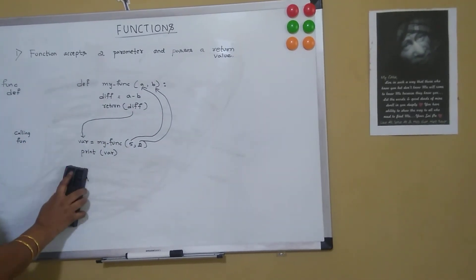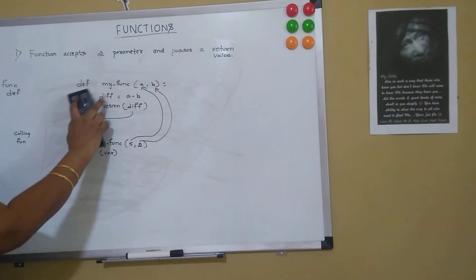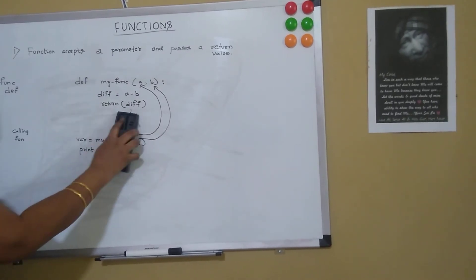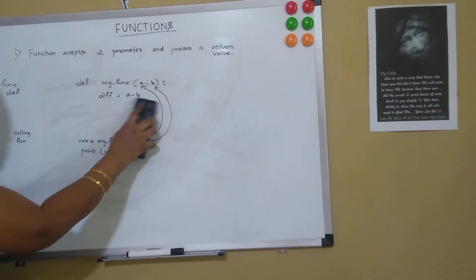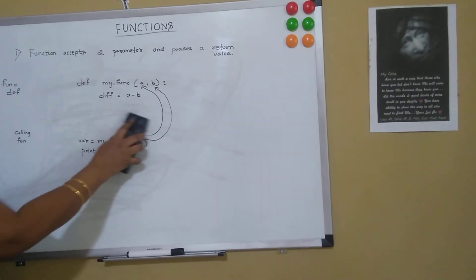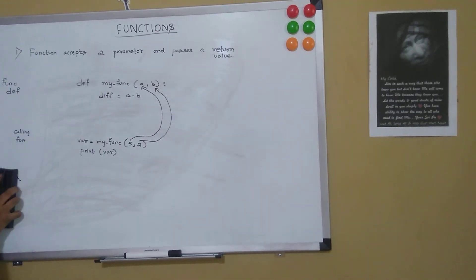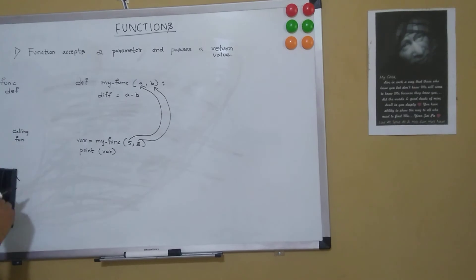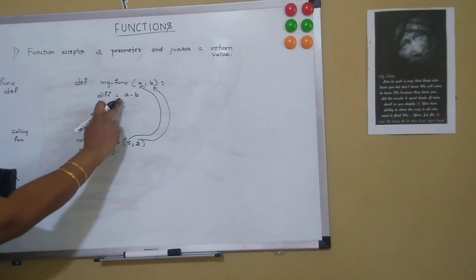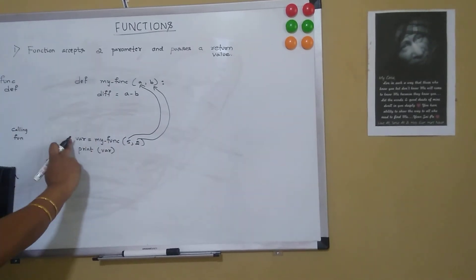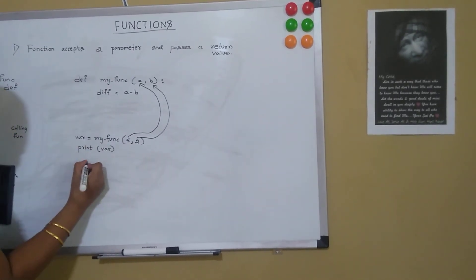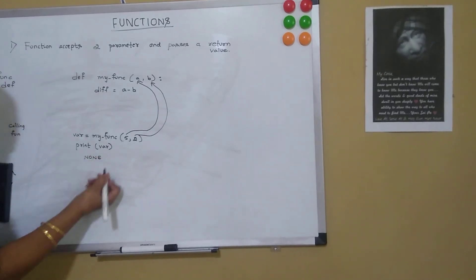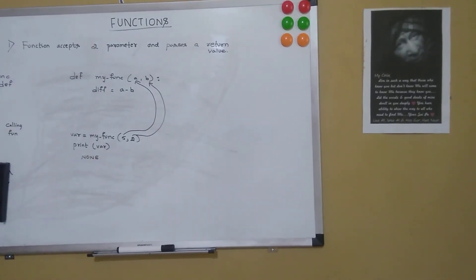Now in the same function, after calculating the difference, if I don't pass the return value — if I don't return anything — and I say print(var), then nothing is passed from the function to the variable, so it will print as None. So the value None will get printed.